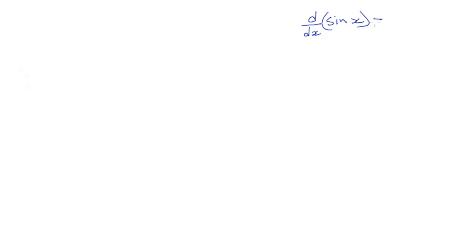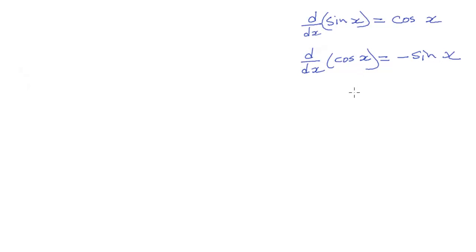In this video, we're going to work through the proof for the trig functions we haven't considered yet: tan, cotan, secant, and cosecant. We're going to use the two rules we have already demonstrated. Those are the derivative with respect to x of sine x, which is cosine x, and the derivative with respect to x of cosine x, which is negative sine of x. We used the delta process to prove the first one, and used that to show the second must be true.